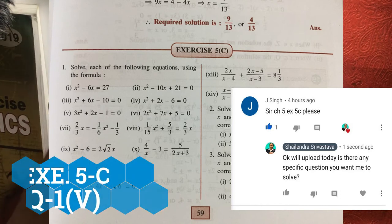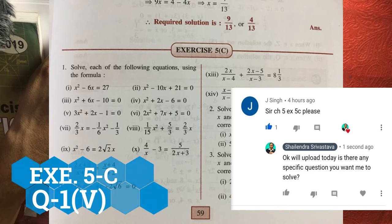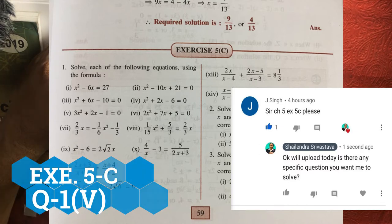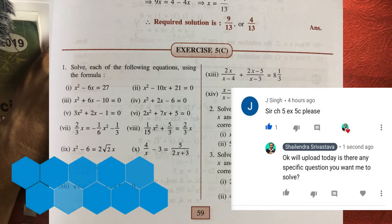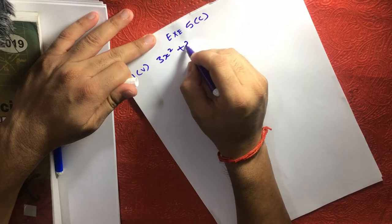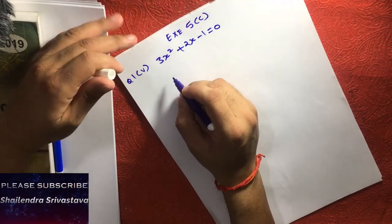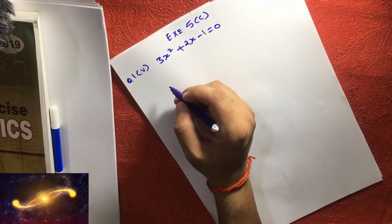Next question in the same exercise 5C question 1 fifth point. The equation is 3x square plus 2x minus 1 is equal to 0. Let's see how we can solve this kind of a question.